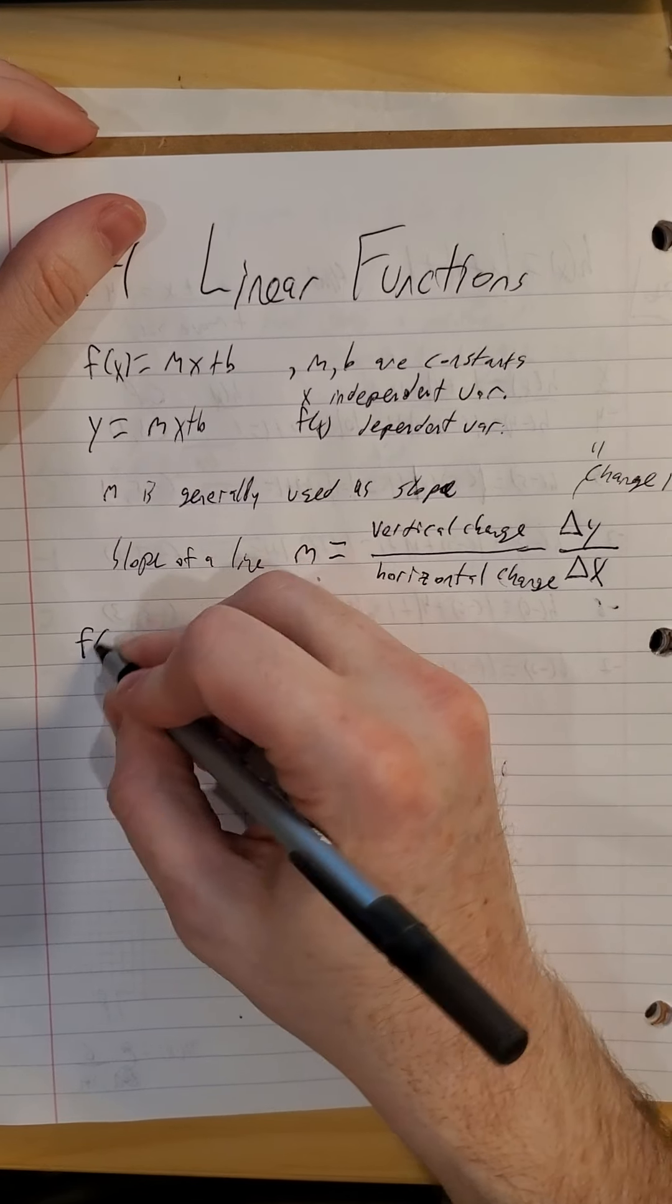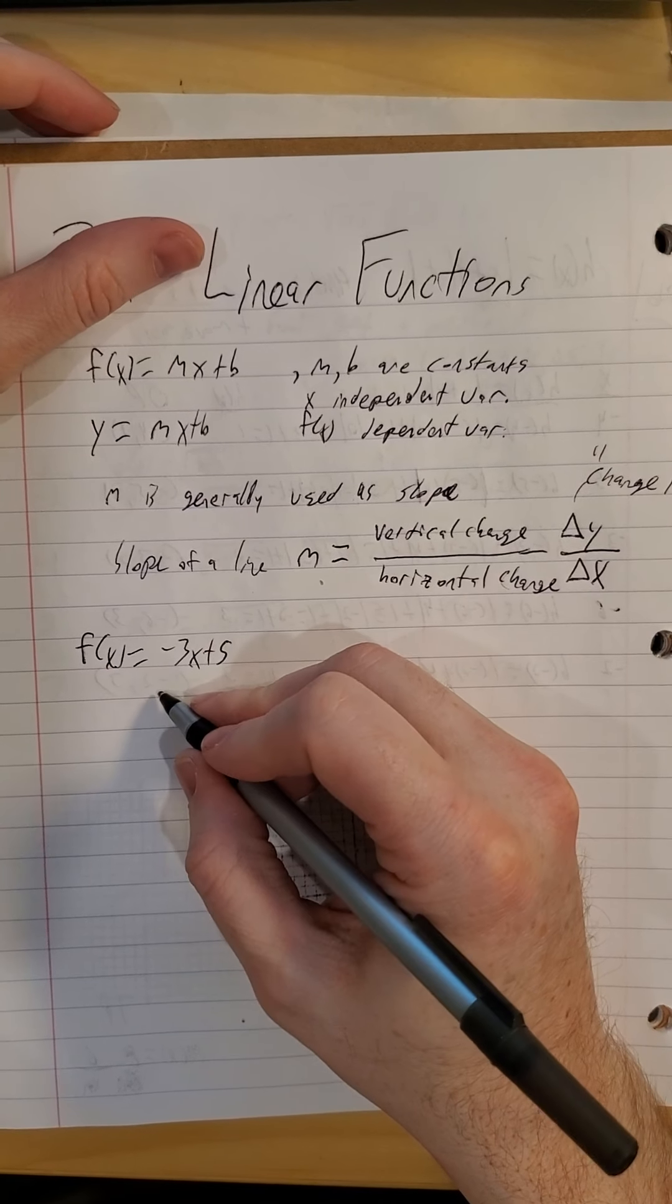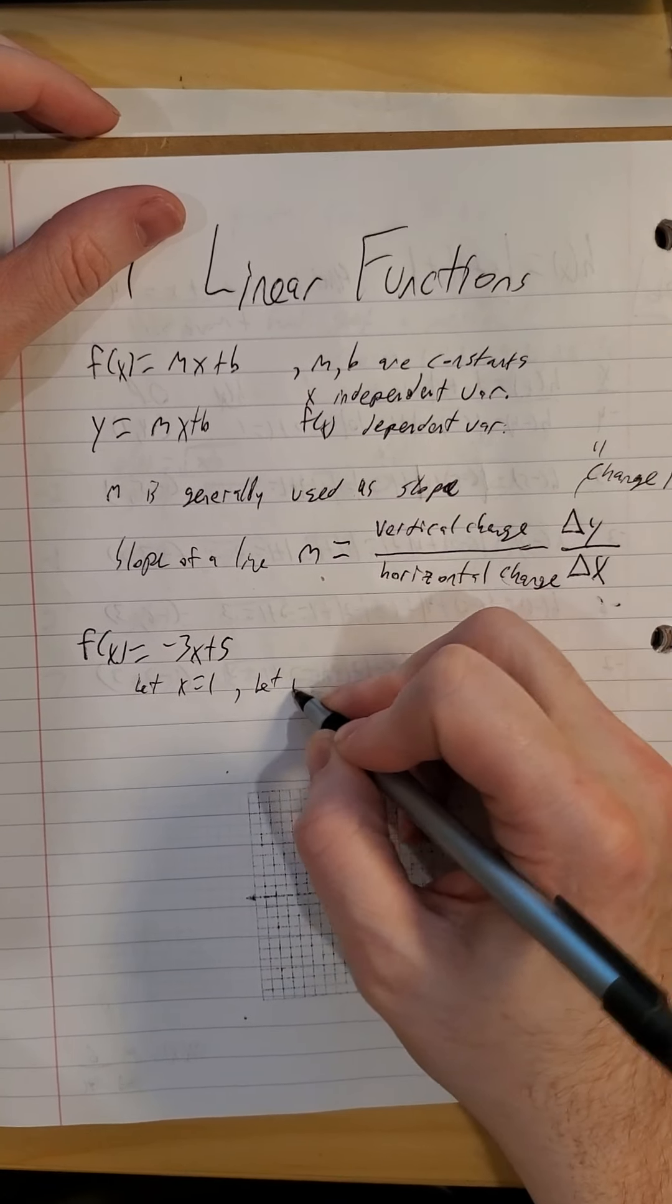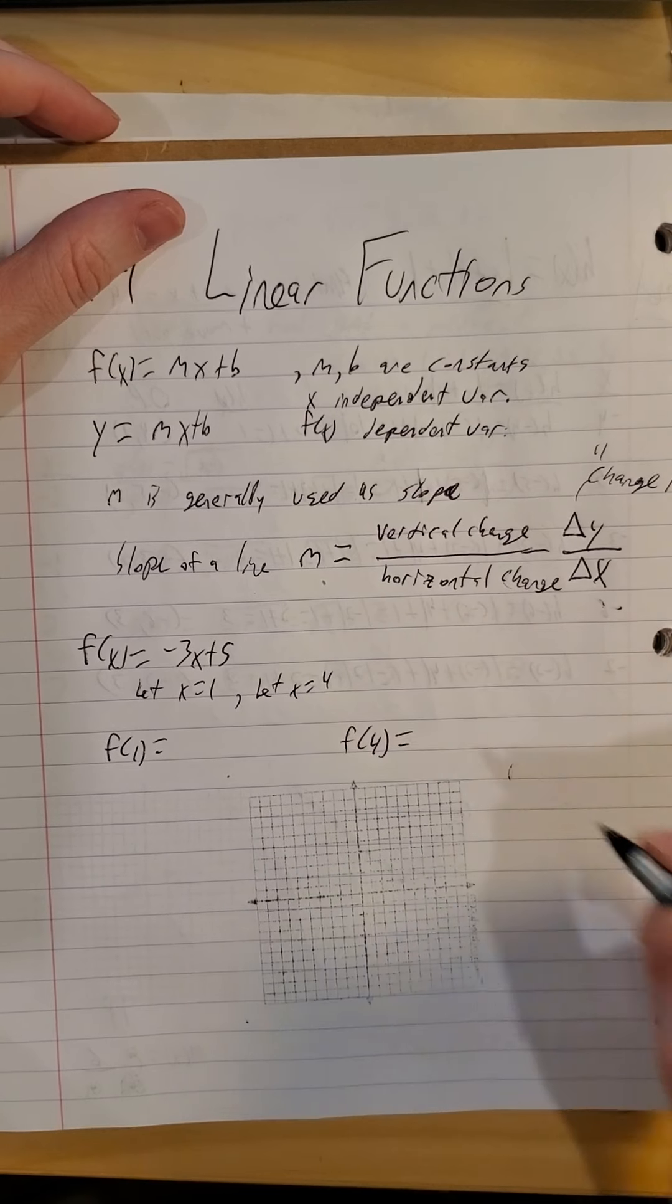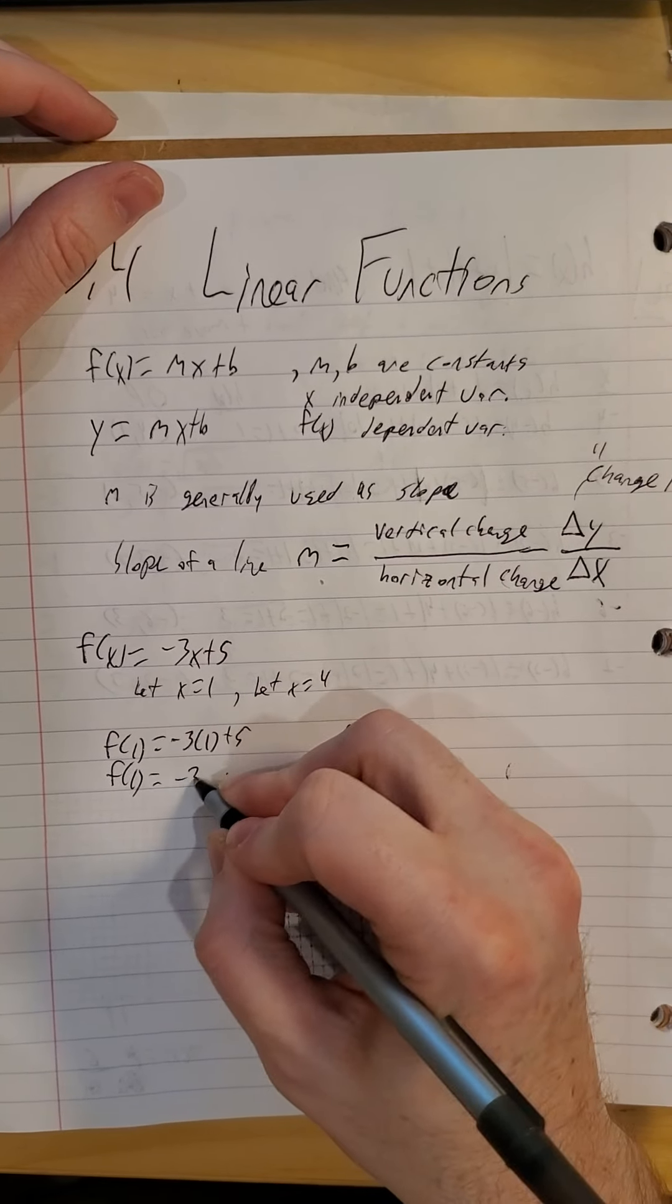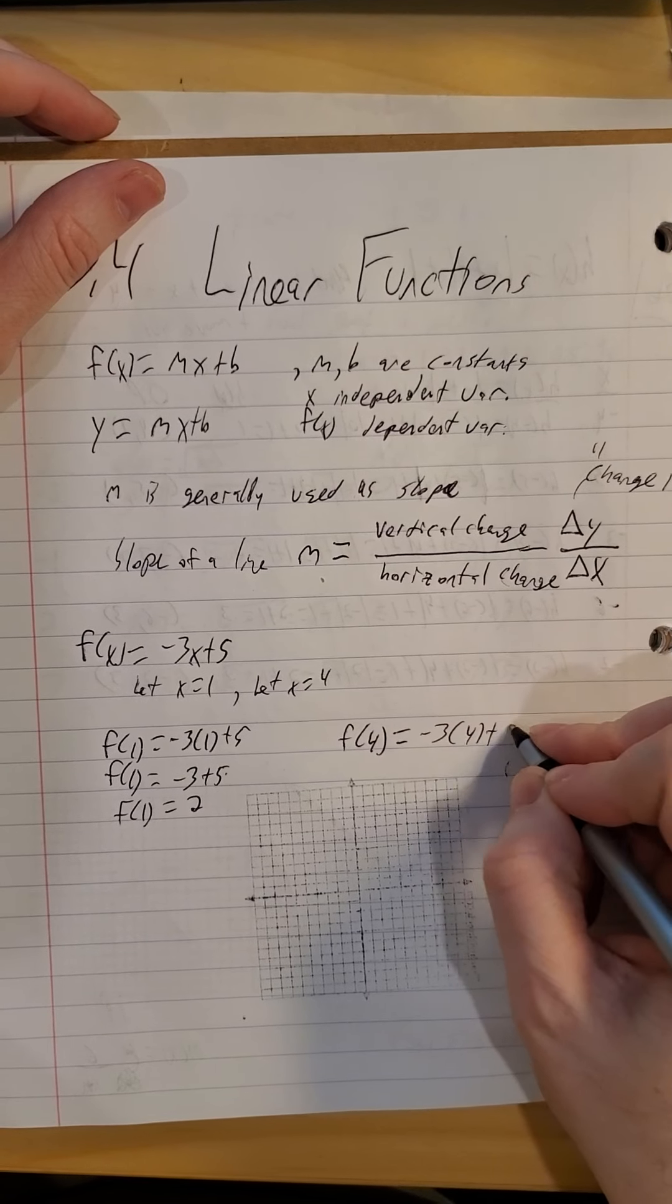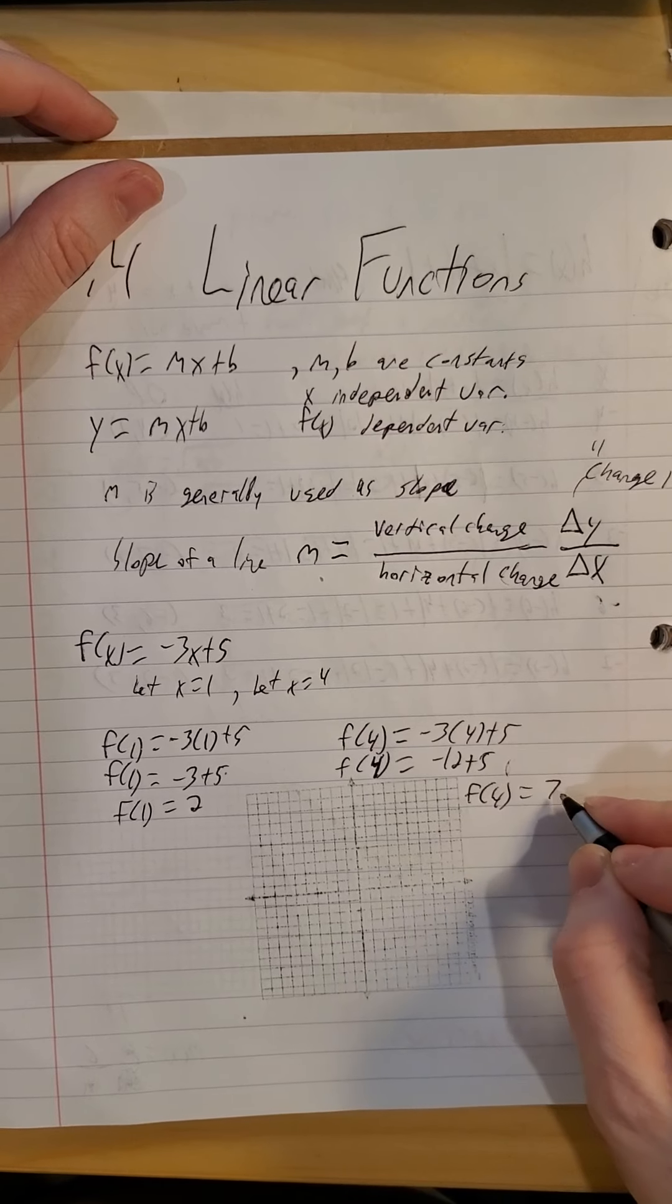So for example if we get the function f of x is negative 3x plus 5, I might pick 1 and 4 to be my inputs. Go ahead and pause it, find f of 1 and f of 4. We'll come back, so negative 3 by 1 plus 5. So f of 1 is negative 3 plus 5, f of 1 is a positive 2. f of 4, negative 3 by 4 plus 5. So f of 4, negative 12 plus 5, f of 4 is a negative 7.